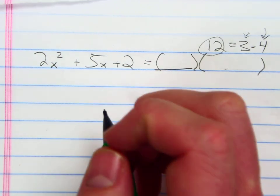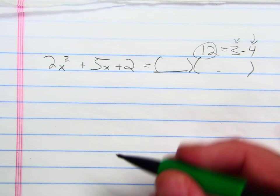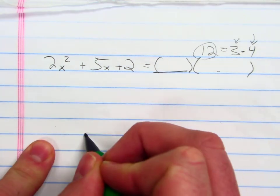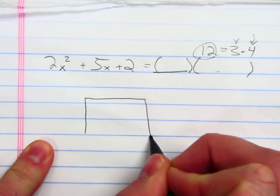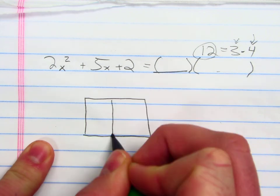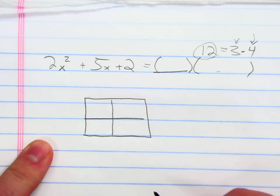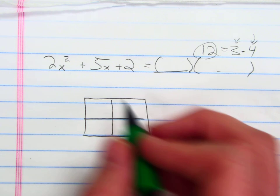So since we're factoring using the box method, I'm going to begin by drawing my box, just like we do when we multiply polynomials. And I want to take my first term and put it in my first box, and take my last term and put it in my last box.